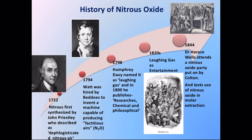Nitrous oxide was first synthesized as early as 1722 by John Priestley, who described it as 'dephlogisticated nitrous air.' In 1794, Watt was hired by Beddoes to invent a machine capable of producing nitrous oxide, called 'factitious airs.' In 1799, Humphrey Davy was the first to refer to nitrous oxide as laughing gas, owing to the euphoria it produced, and during the 1820s it was largely used as a source of entertainment during parties.